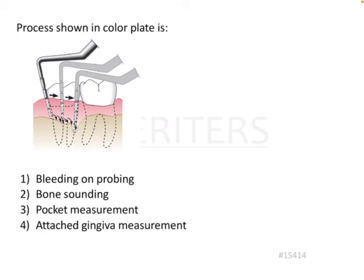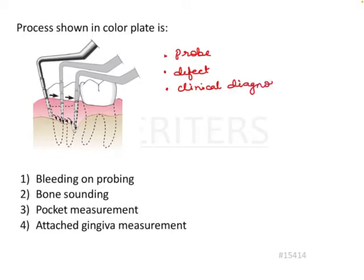The process shown in the color plate is a clinical diagnosis procedure being carried out. Here we have a probe and a defect. As we can see, there is a probe that goes into the defect and they are trying to find out if there is something wrong with the tissues.